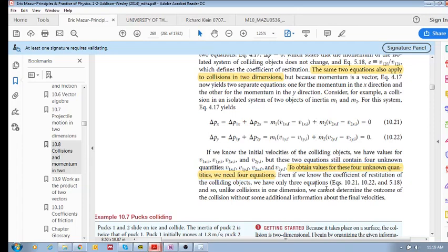And then a third potential equation is if we know the coefficient of restitution. But that still only gives us three equations: this one, this one, and your coefficient of restitution. So this is a problem because we've only got three equations but with four unknowns.